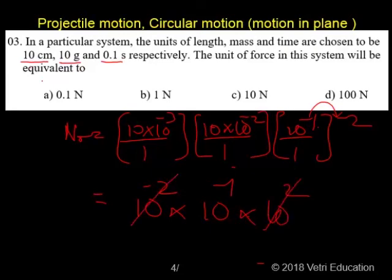So, 10 to the minus 2, 10 to the plus 2 will be cancelled. We will have an answer of 10 to the minus 1. So, answer is 0.1 Newton.